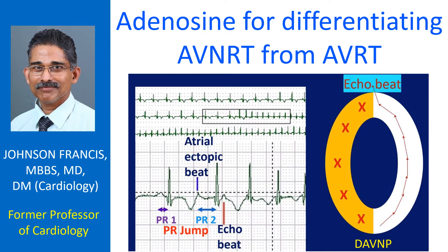Adenosine can induce a PR jump on surface ECG in those with AVNRT, which can be used to differentiate AVNRT from AVRT with concealed accessory pathway. In those with a concealed accessory pathway, pre-excitation will not be manifest in the ECG as there is no antegrade conduction in that pathway in sinus rhythm.